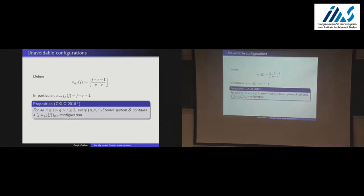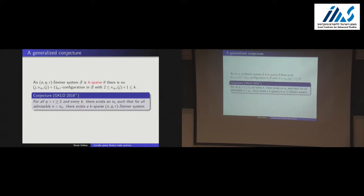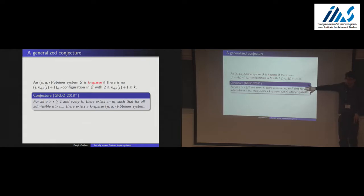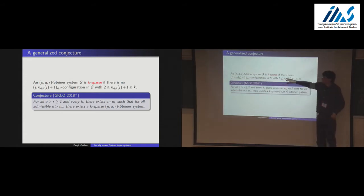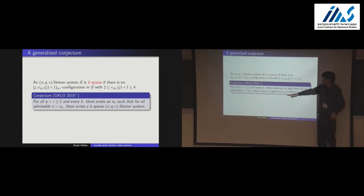We can then conjecture a far-reaching generalization of the Erdős conjecture: if we add plus 1 to the unavoidable threshold in the general setting, those denser configurations can be avoided. This conjecture generalizes the Erdős conjecture, so it's very hard.